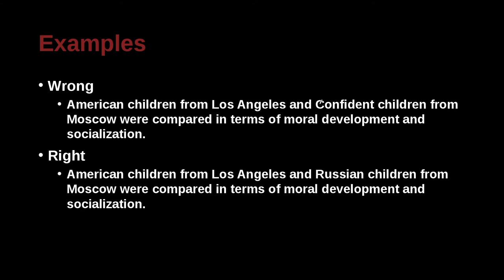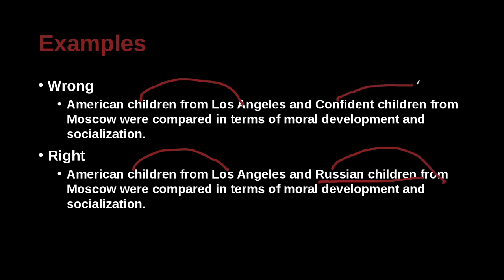American children from Los Angeles and Soviet children from Moscow were compared in terms of moral development and socialization. The corrected version is: American children from Los Angeles and Russian children from Moscow. Because we say 'American children from Los Angeles,' we should also say 'Russian children from Moscow' — the original phrasing was making some kind of value judgment, which is inappropriate.